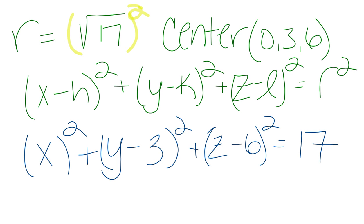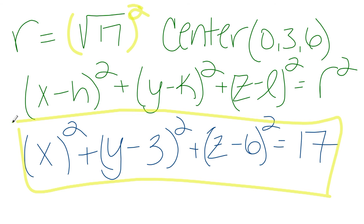We are done. We have written the standard form of the sphere given the endpoints negative two, zero, four and two, six, eight. Remember, I only solved this problem because a subscriber sent it in. So if you're not a subscriber, why not? Hit subscribe, send me your problems — I'll do those too. Thanks for watching.